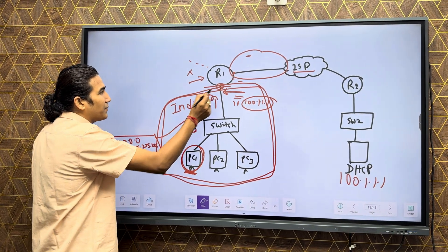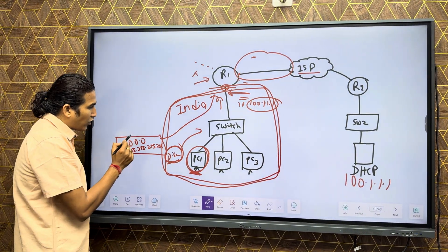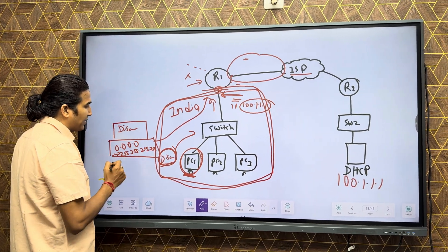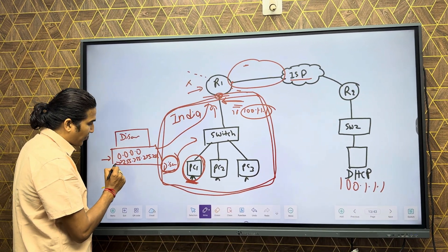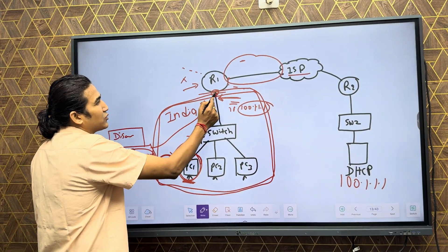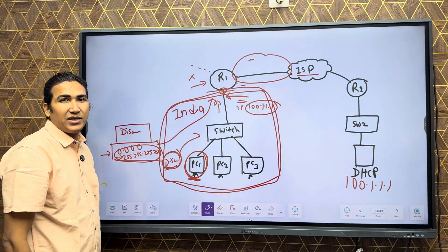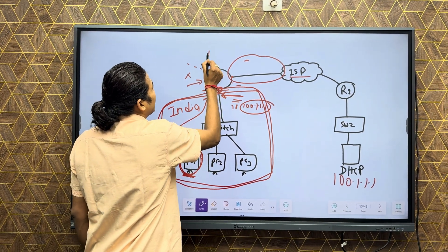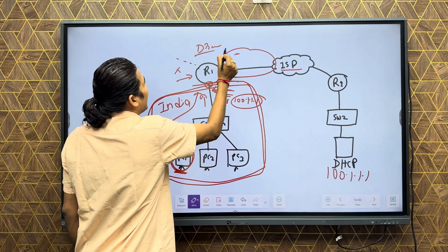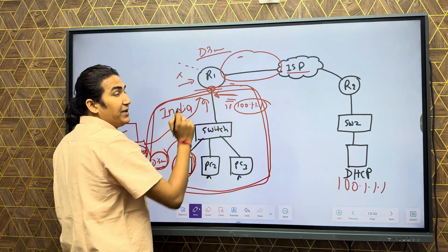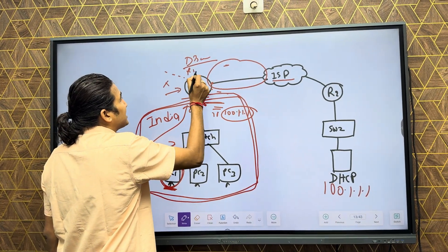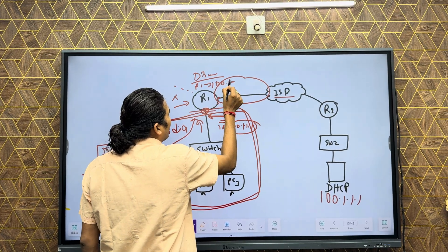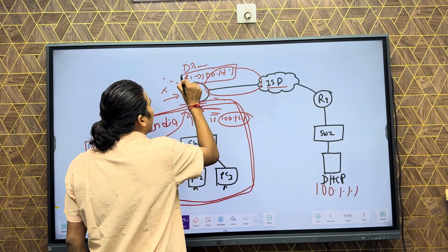The router will not change anything inside the Discover message — the Discover message content stays the same. In the IP header, the destination changes from the broadcast address to the DHCP server address. So on the router, the DHCP Discover message is forwarded with the source IP address becoming Router 1's IP address and the destination IP address becoming the DHCP server address: 100.1.1.1.